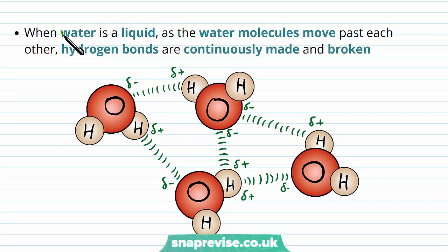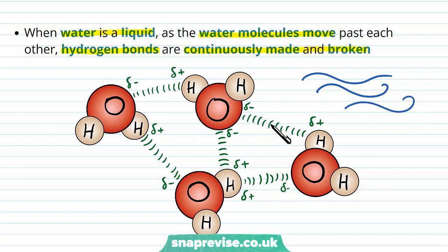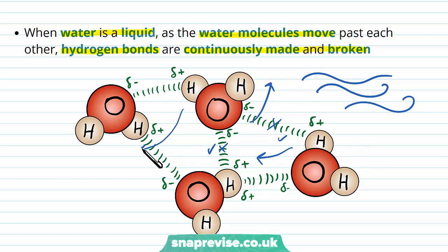When water is a liquid, we have water molecules moving past each other, but still kind of attached by hydrogen bonds between the molecules. The hydrogen bonds get continuously made and broken. Imagine a whole mess of water molecules in a container with all of the hydrogen bonds connecting them. In liquid water, as one hydrogen bond breaks, another one forms, so they're continuously being made and broken as the water molecules flow around each other. It's this flowing nature of the molecules which gives water its flowing nature overall.